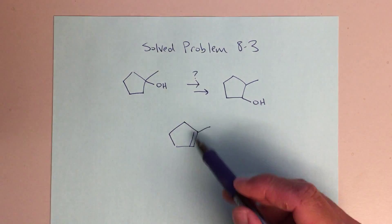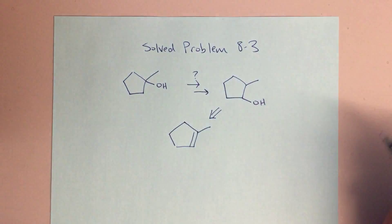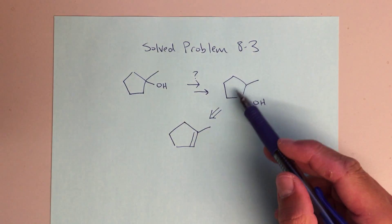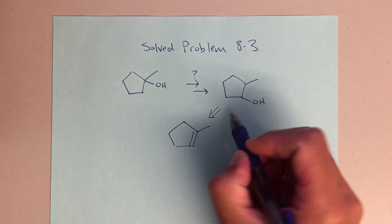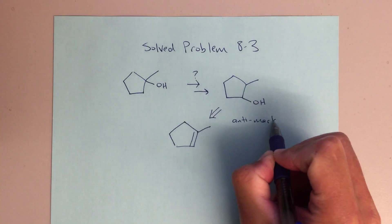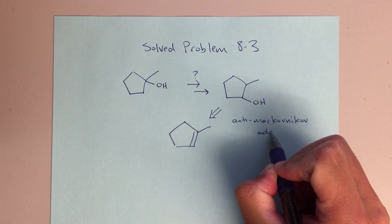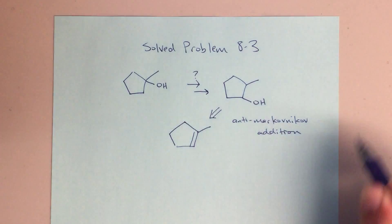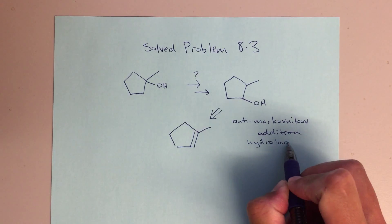Trying to think about this from a retrosynthetic point of view, I know that to make an alcohol that looks like this from an alkene that looks like this, I'm going to need to do an anti-Markovnikov addition, and the way I'm going to do that is hydroboration.